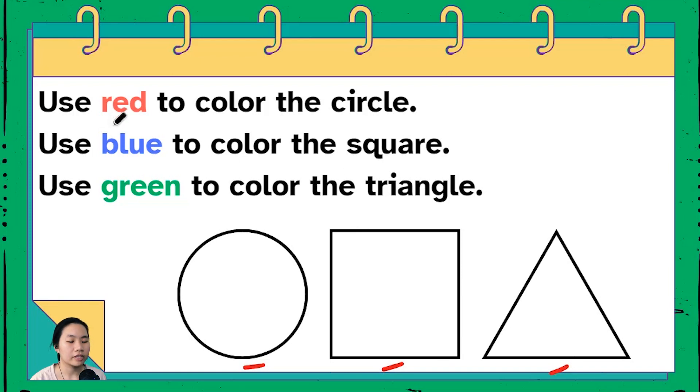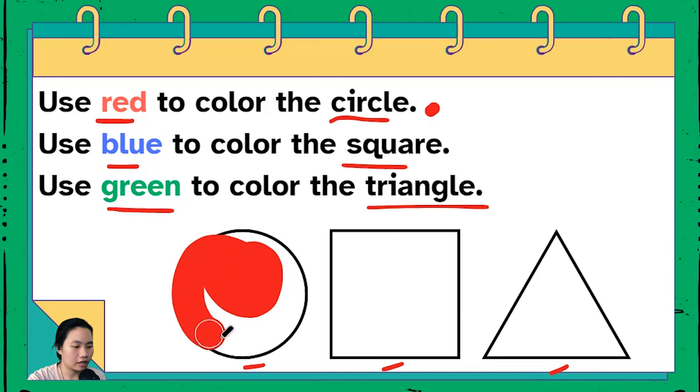And we're being instructed to use red to color the circle, use blue to color the square, and use green to color the triangle. Okay so firstly I have red. Red to color the circle. I'm gonna make my pen really big and then color in the circle.